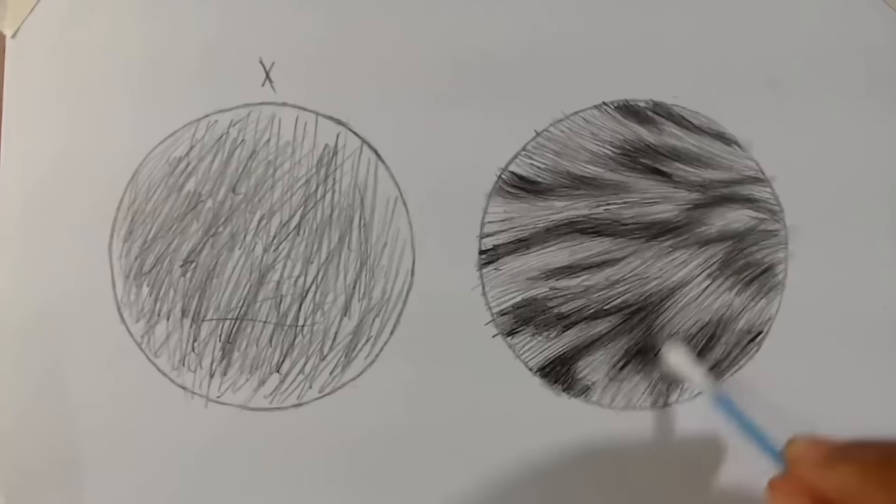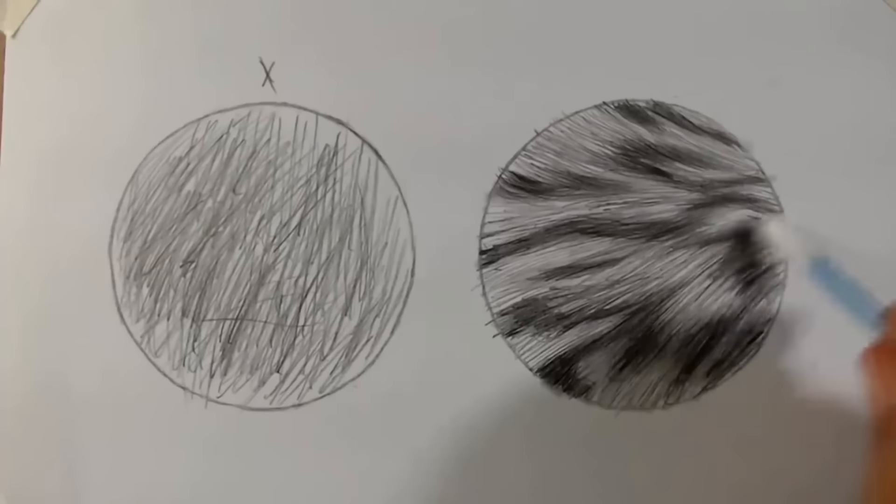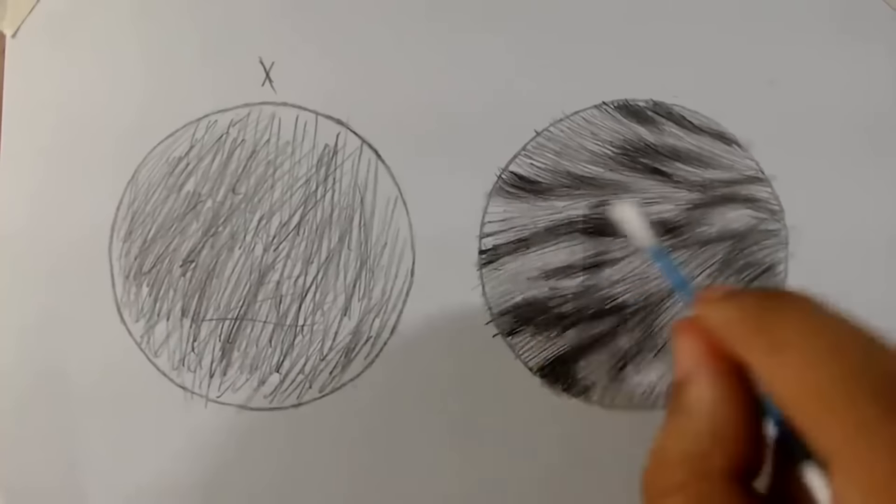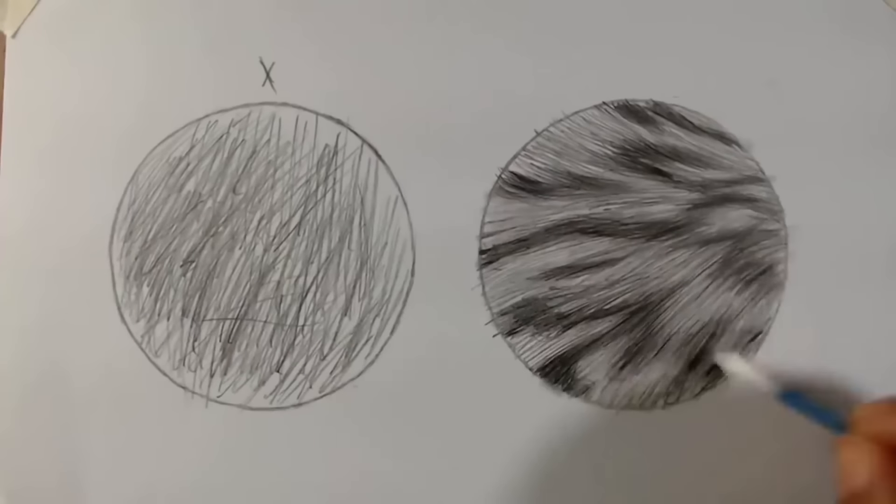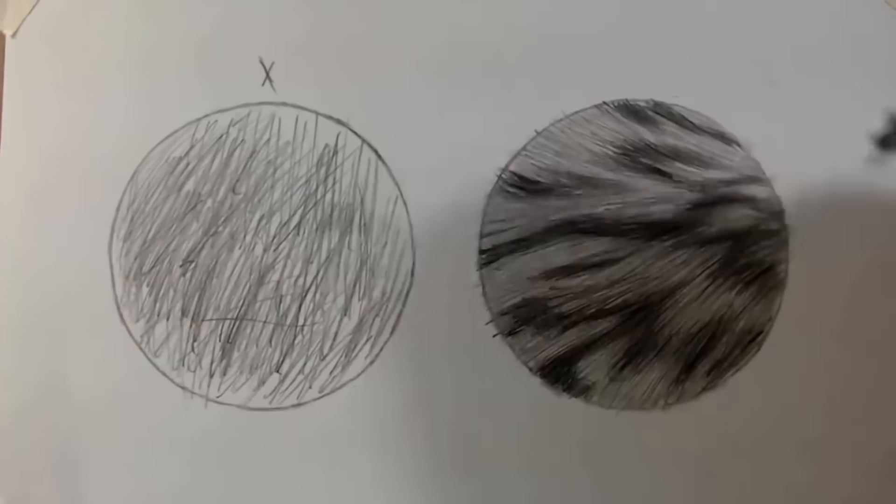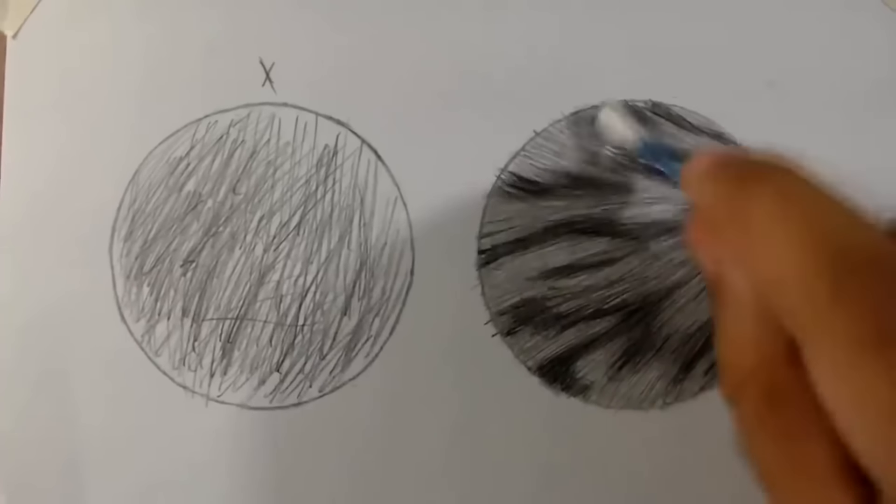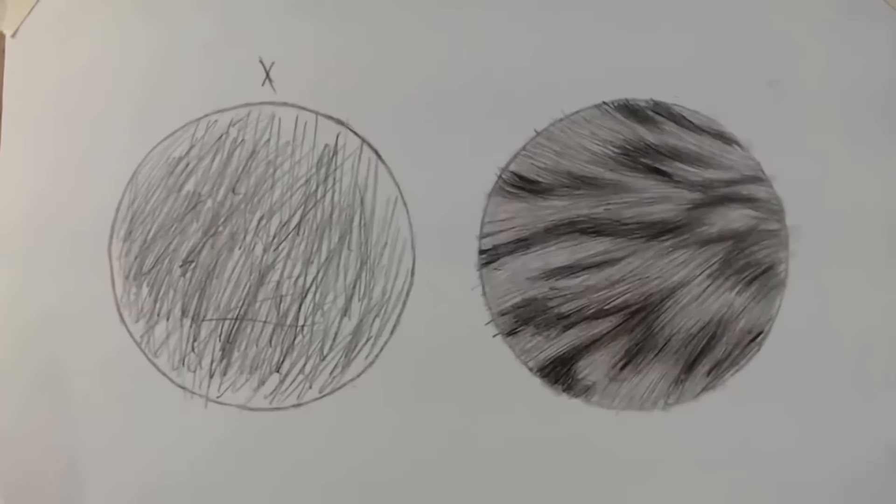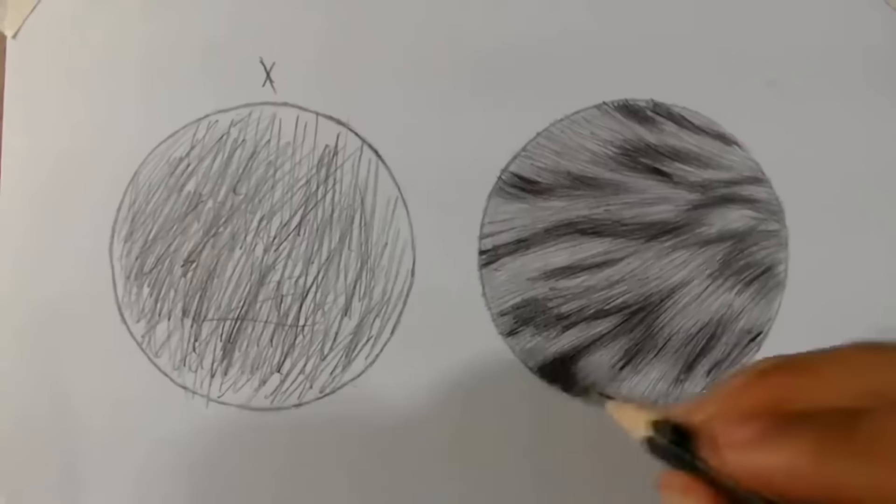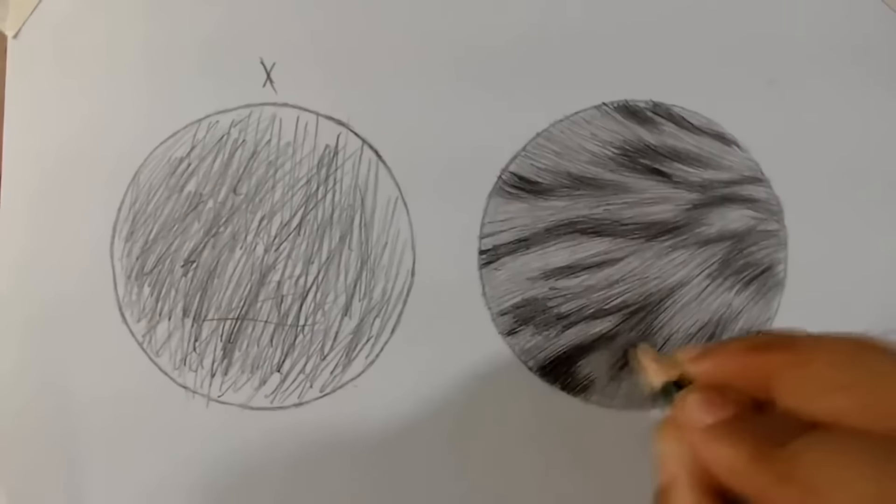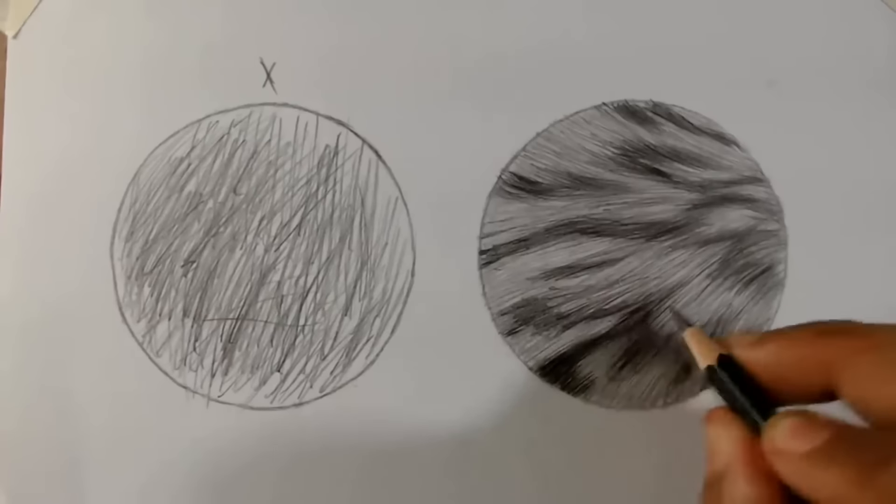Oh, and one thing, ease off the pressure of the cotton swab now. Good, and one thing that usually happens when we use blending stamp or else the cotton swab is that the lines fade a little.